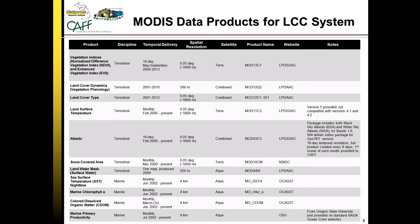This is a table summarizing the data products in the LCC system. There are 11 MODIS standard products selected, and each one encompasses several sub-products. For example, the first row is vegetation indices, and within that there are different layers including a Normalized Difference Vegetation Index (NDVI), an Enhanced Vegetation Index (EVI), and many other parameters. These standard products are also available at different spatial and temporal resolutions. For example, the vegetation indices cover the entire pan-Arctic extent at 5.6 kilometers, as a 16-day product downloaded from May to September, 2000 to 2013.